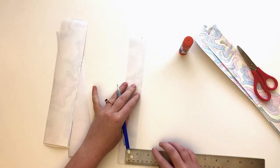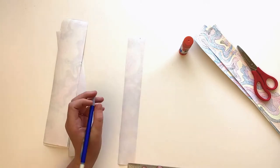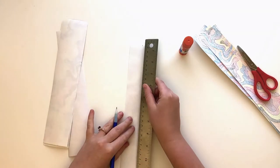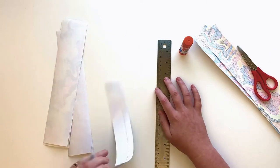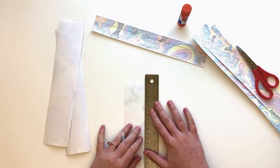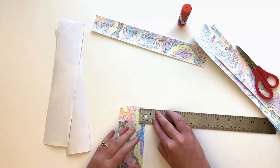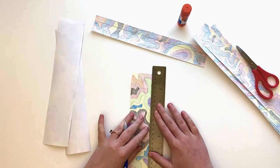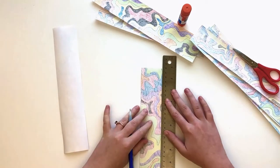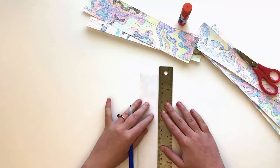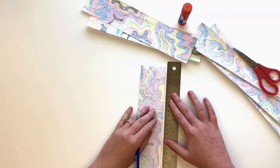Flip the paper strips over and on the blank side draw a mark a quarter inch from the top edge on both ends of the paper. Draw a line across the strip connecting your markings. Then, flip the paper over to the design side and again mark a quarter inch and connect your marks with a line. Repeat this on all paper strips.